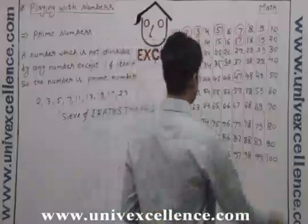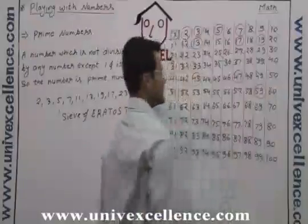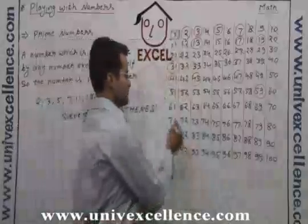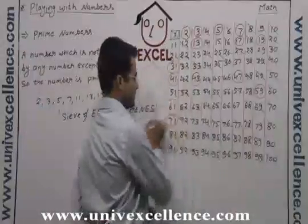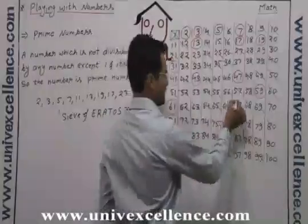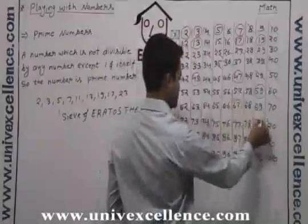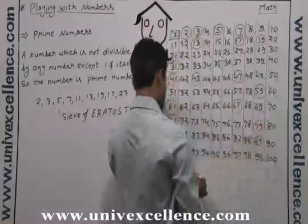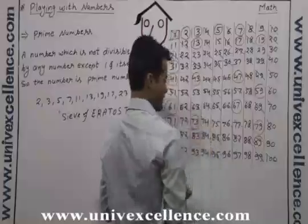Then we have 59. The multiples of 59 will be cut. 61, 71, 67, 79, 89, 73, 83 — these are also noted.